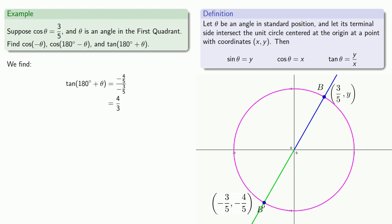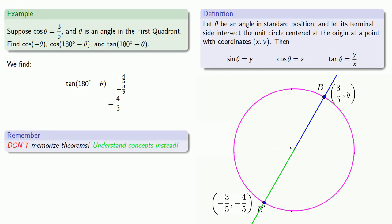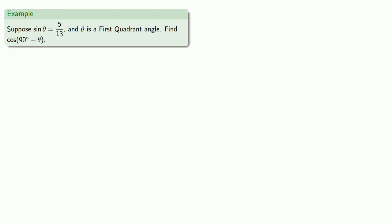And this is an example of a theorem, but you're not going to memorize the theorem — you're going to understand the concept of a rotation and a reflection. Or suppose we know that sine of θ is 5/13 and θ is a first quadrant angle. Let's find cosine of 90° - θ.